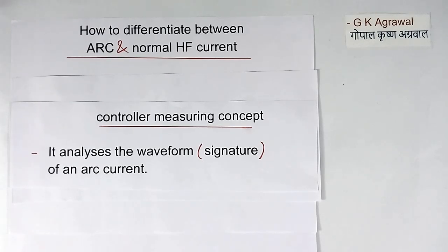Now after measuring so many parameters of the current waveform, controller will analyze the waveform of the arc current. This is also called the signature. High frequency current is produced by many equipments, but the nature of high frequency current or nature of the high frequency waveform will be different for different equipment. That waveform is called the signature. By seeing that waveform, controller can tell it is due to arc current or due to some other reason.